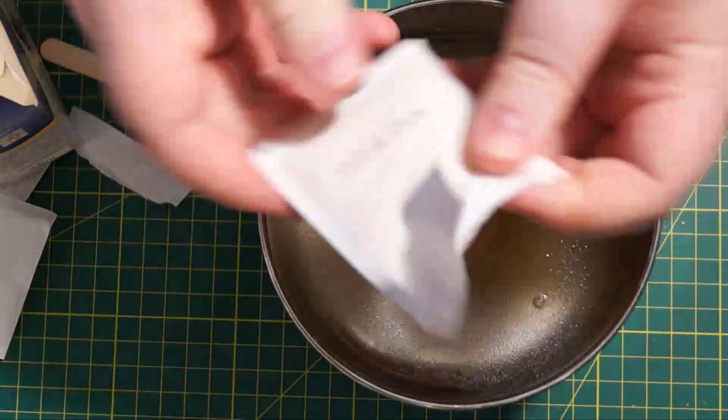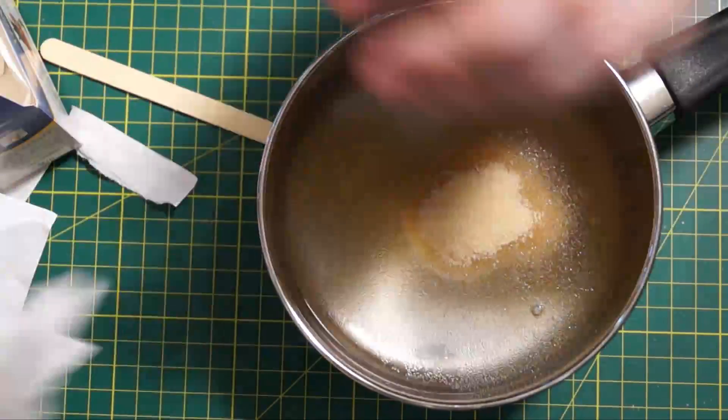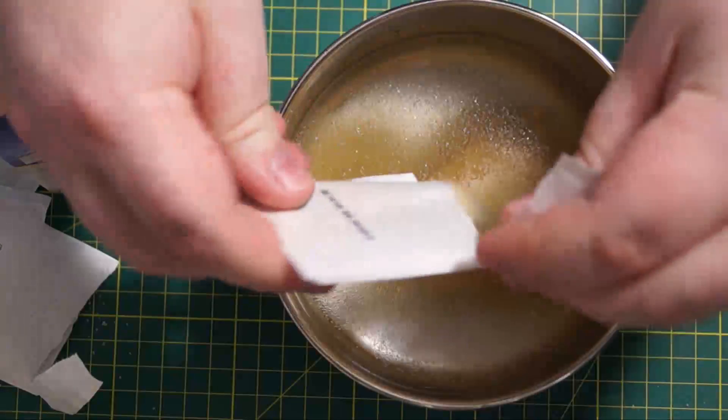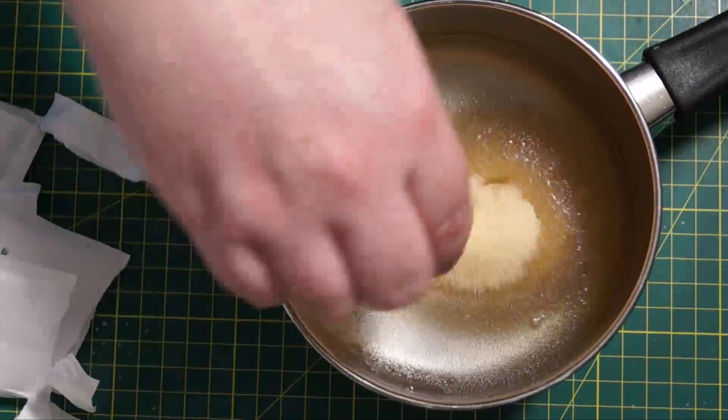So continue to add. So that's 3, this is 4 and one more. So that's 5, so 50 grams of gelatin. And then we just start stirring with the popsicle stick.